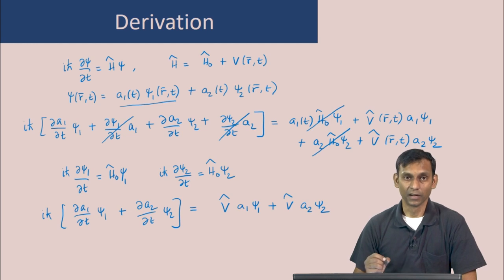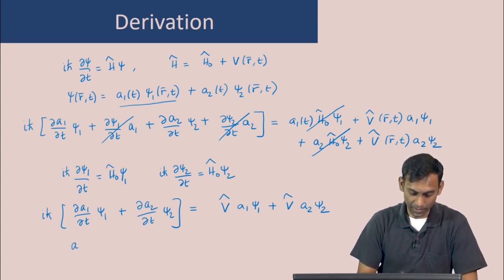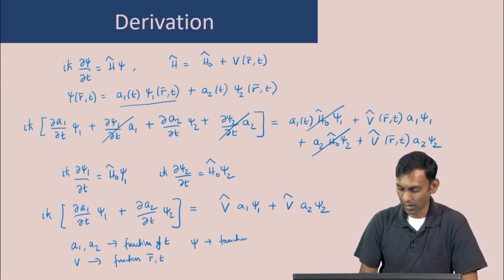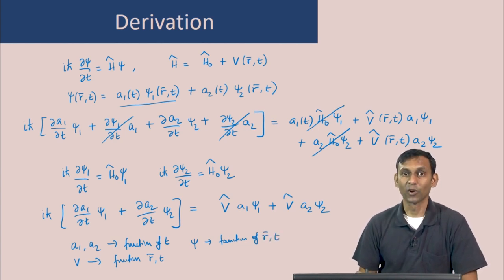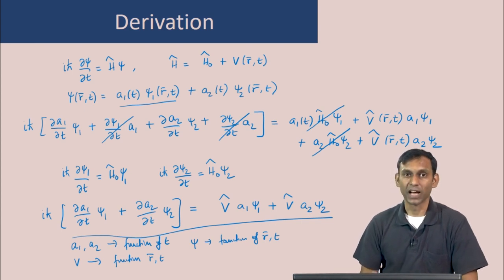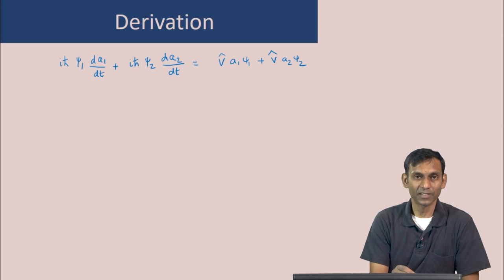We have to keep in mind that the functions a, V, and ψ depend on variables that are implicit here. Specifically, a1 and a2 are functions of t, V is a function of r and t, and ψ is a function of r and t. In the interest of compact notation, I am not writing these explicitly. Also, the derivative of a with respect to time is a regular derivative since a does not depend on any other variable besides time.